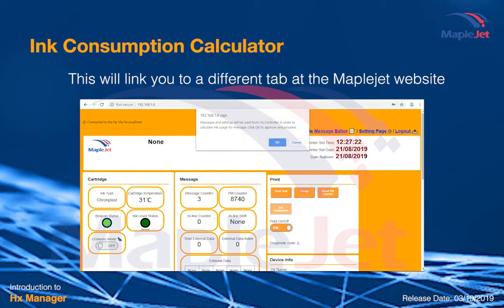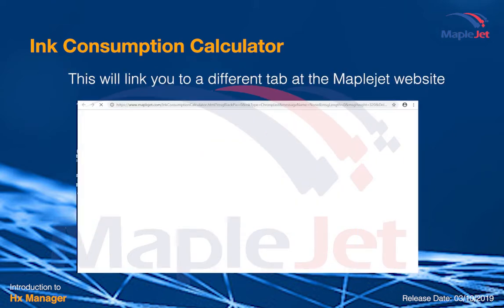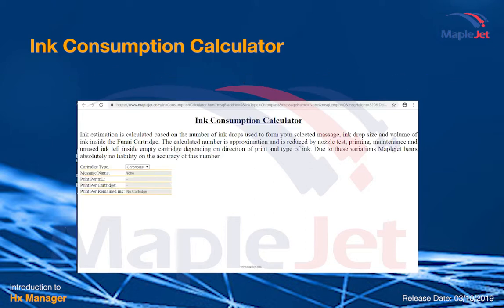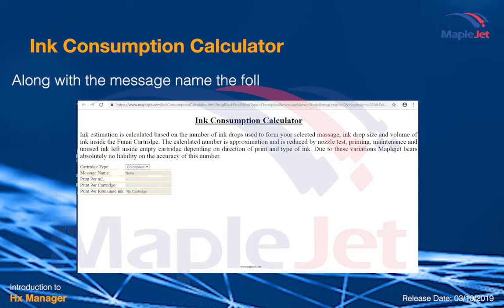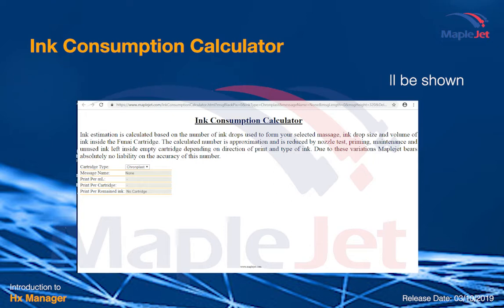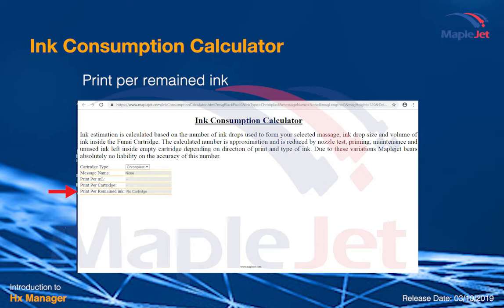This will link you to a different tab at the MapleJet website. Select the type of ink you are using. Along with the message name, the following estimation will be shown: prints per milliliter, prints per cartridge, and prints for remaining ink.